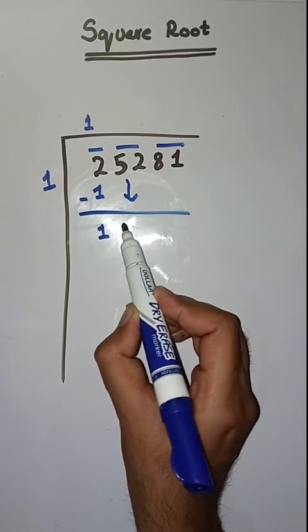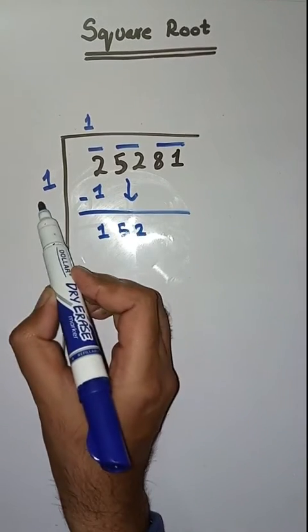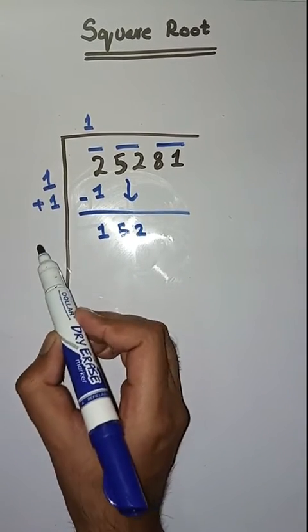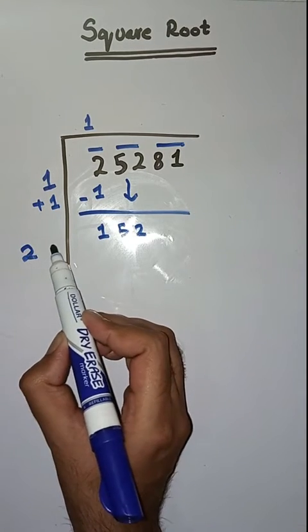Next pair is 52. We will bring it down. Here we will do 1 plus 1 which is equal to 2. So we will take a number 5, 25.